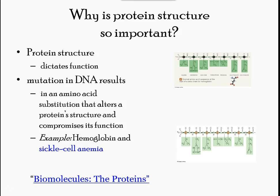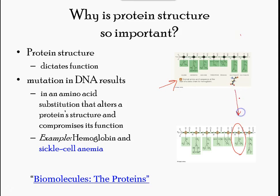When one amino acid is altered from the hemoglobin chain, it leads to a mutation in DNA and compromises its function. For example, in the hemoglobin molecule, when the amino acid on the right side of the image is replaced, it causes a disease such as sickle cell anemia.